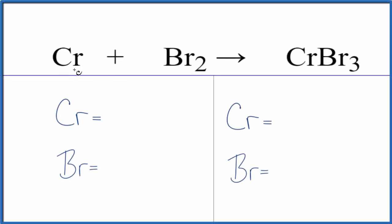In this video, we'll balance the equation for Cr plus Br2 yields CrBr3. This is chromium metal plus bromine gas, and we get this chromium 3 bromide.